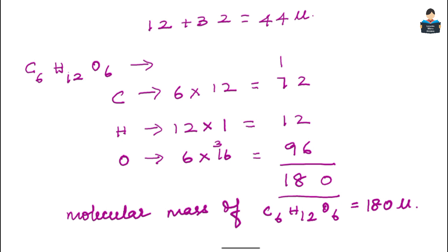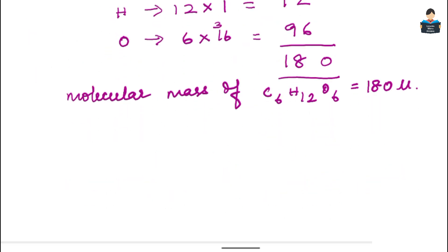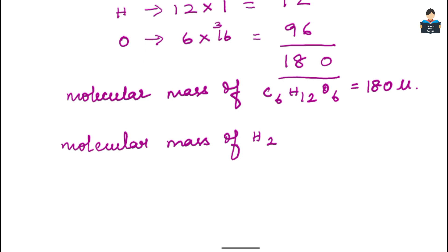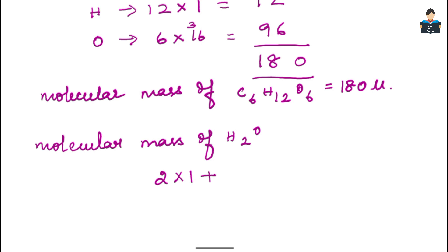Now the molecular mass of water (H2O): 2 atoms of hydrogen with atomic mass 1 gives 2 × 1 = 2. One oxygen atom with atomic mass 16 gives 16. So the molecular mass of water is 2 + 16 = 18 u (or amu).